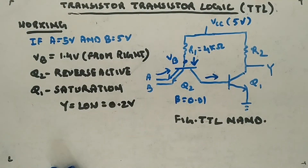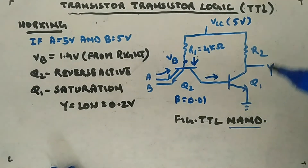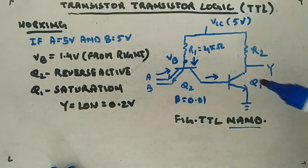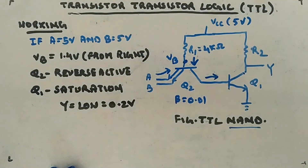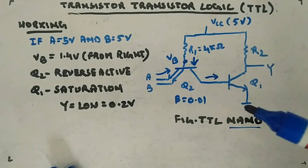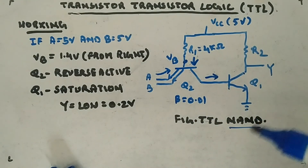So for inputs 0-0, 0-1, or 1-0, output is high; for input 1-1, output is low. This confirms it is a NAND gate — a TTL NAND gate. However, it has some drawbacks and shortcomings that need to be addressed. A modified TTL version will be presented next with reasons for the modifications. This was the basic TTL NAND gate circuit.